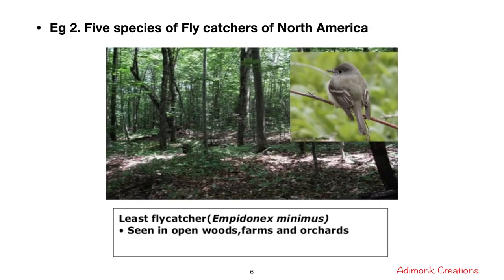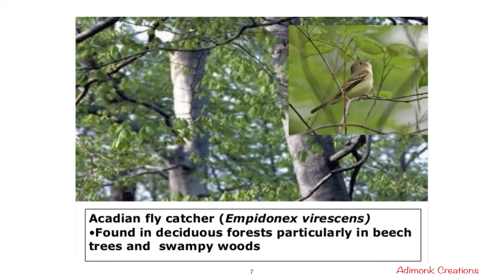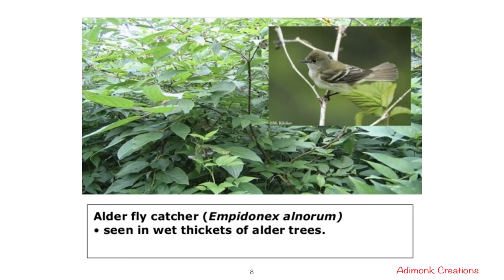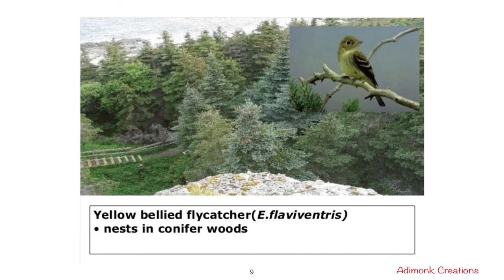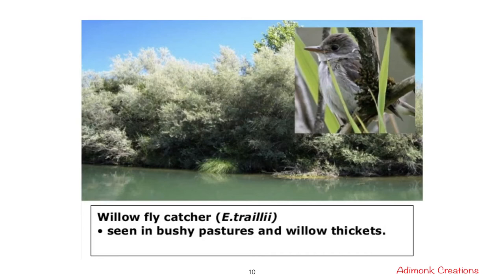Another example is five species of flycatchers in North America. They look almost the same but cannot meet and mate due to their different habitats. These are: the least flycatcher (Empidonax minimus), seen in open woods, farms, and orchards; the Acadian flycatcher (Empidonax virescens), found in deciduous forests particularly in beech trees and swampy woods; the alder flycatcher (Empidonax alnorum), seen around wet thickets of alder trees; the yellow-bellied flycatcher (Empidonax flaviventris), nesting only in conifer woods; and the willow flycatcher (Empidonax traillii), seen in bushy pastures and willow thickets.